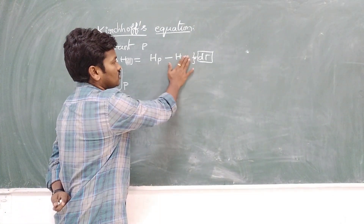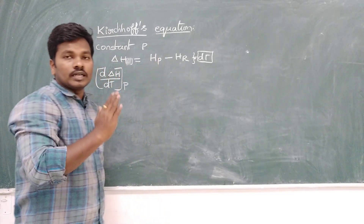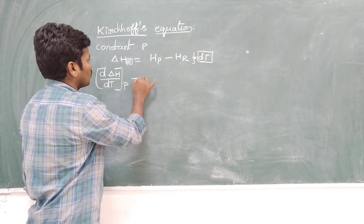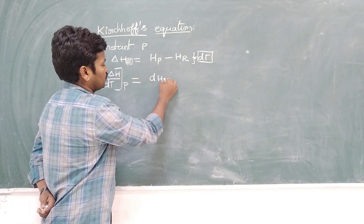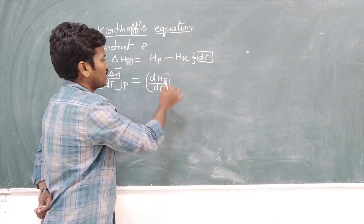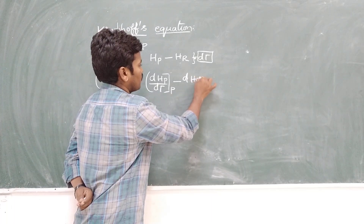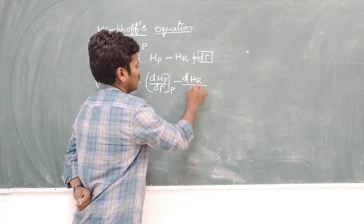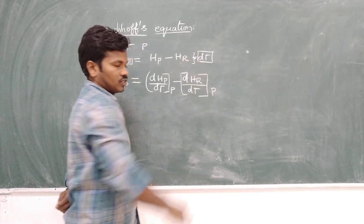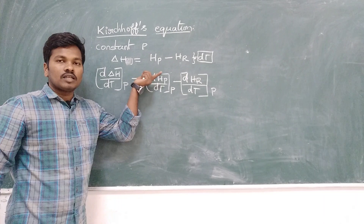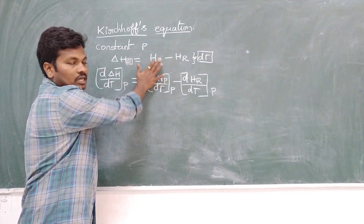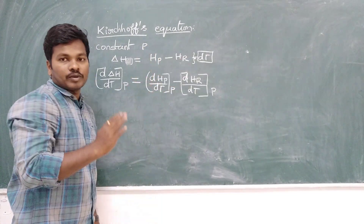The second step is to differentiate this equation with respect to temperature T at constant pressure. So now we write: (∂ΔH/∂T) at constant pressure equals the enthalpy change of the products differentiated with respect to T, minus the enthalpy change of the reactants differentiated with respect to T at constant pressure. Then we differentiate the whole equation with dT.